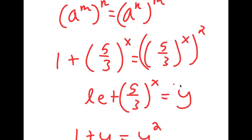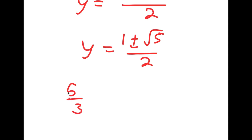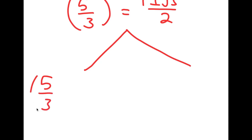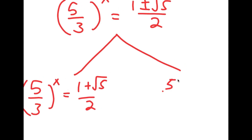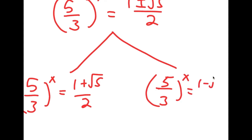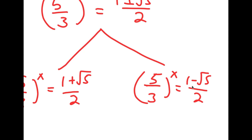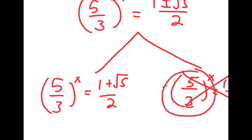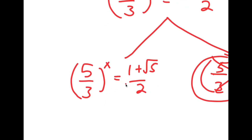Now remember how we let 5 over 3 to the power of x equal to y. So I have 5 over 3 to the power of x equals 1 plus or minus the square root of 5 over 2. This gives me two equations. For the case 5 over 3 to the power of x equals 1 minus the square root of 5 over 2: since 1 minus the square root of 5 is negative, a negative number divided by 2 is still negative. But a positive number to any power cannot equal a negative number, so there is no solution for this case.